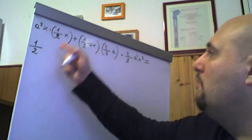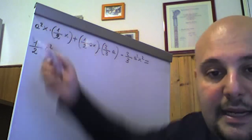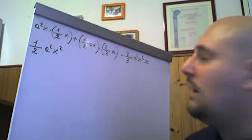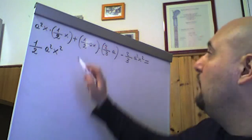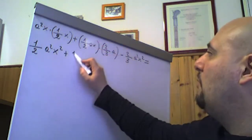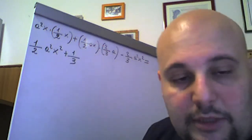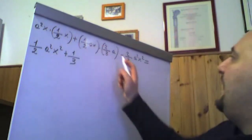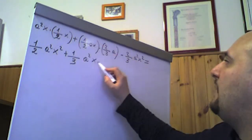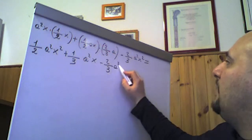Quindi abbiamo che 1/2 × 1 = 1/2, a² rimane, x × x = x^(1+1) = x². Poi abbiamo 1/2 × 2/3: due e due si semplificano, viene 1/3. La parte letterale: a × a = a^(1+1) = a², x c'è solo x. Quindi: 1/2 a²x² + 1/3 a²x − 2/3 a²x².